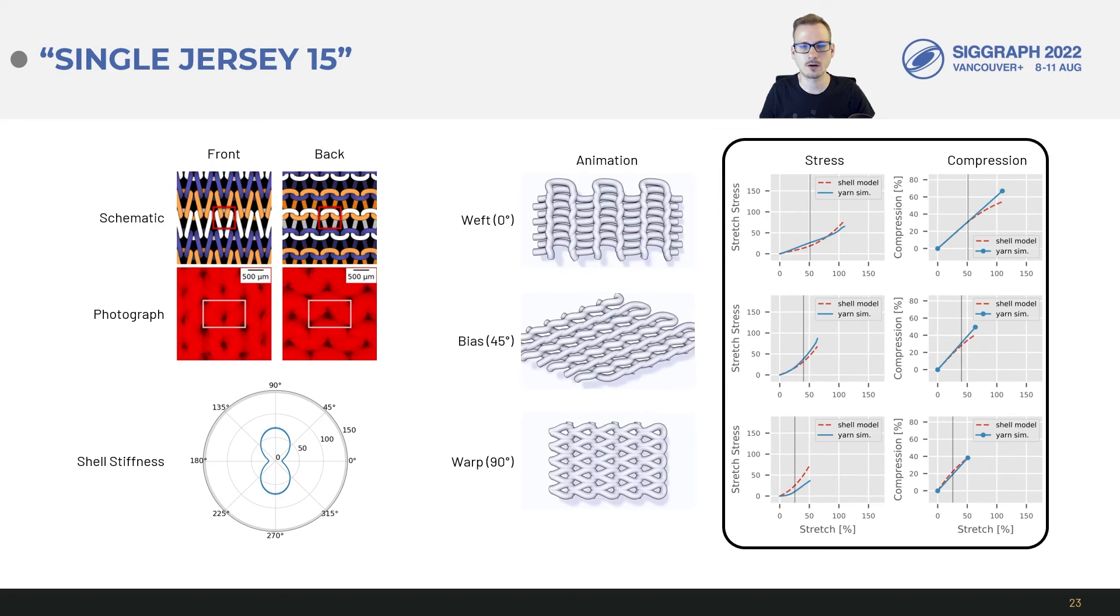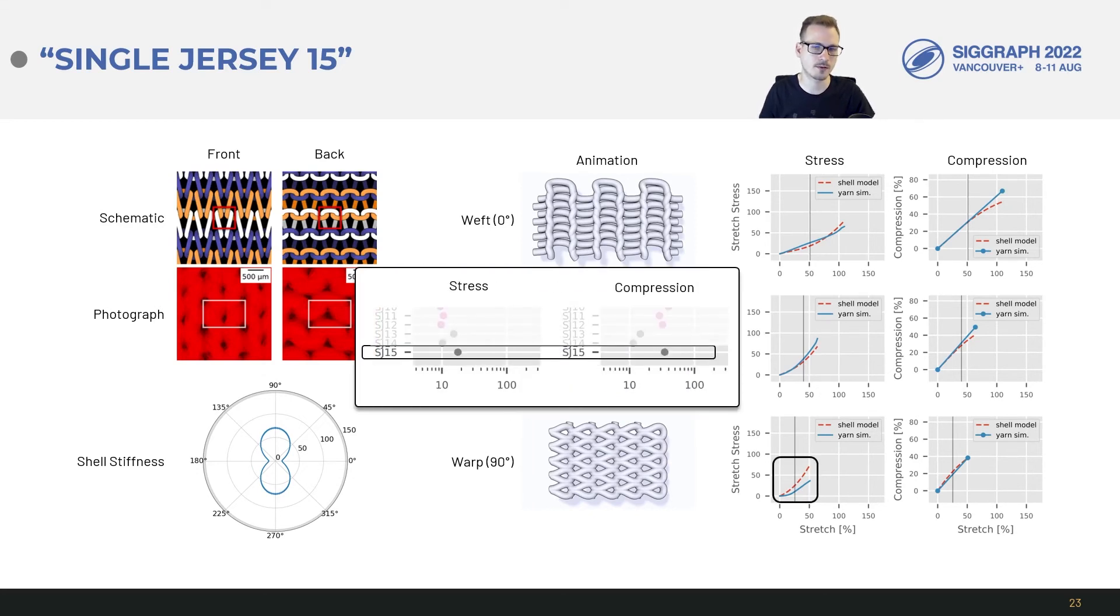And here we have our yarn fits for stretching stress and orthogonal compression. We find a generally good agreement except for the 90 degree stress error. For comparison this was sort of an only okay result in the overview. You can find all the fitting plots in the supplementary document to get a more complete picture.